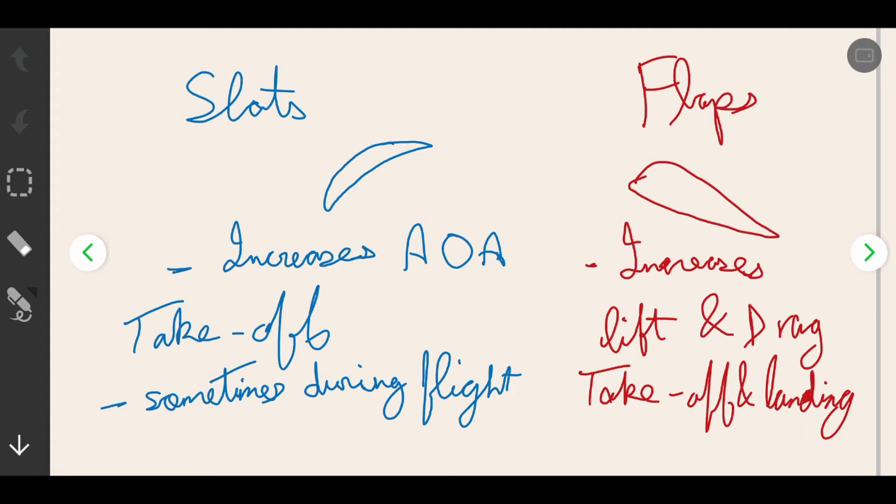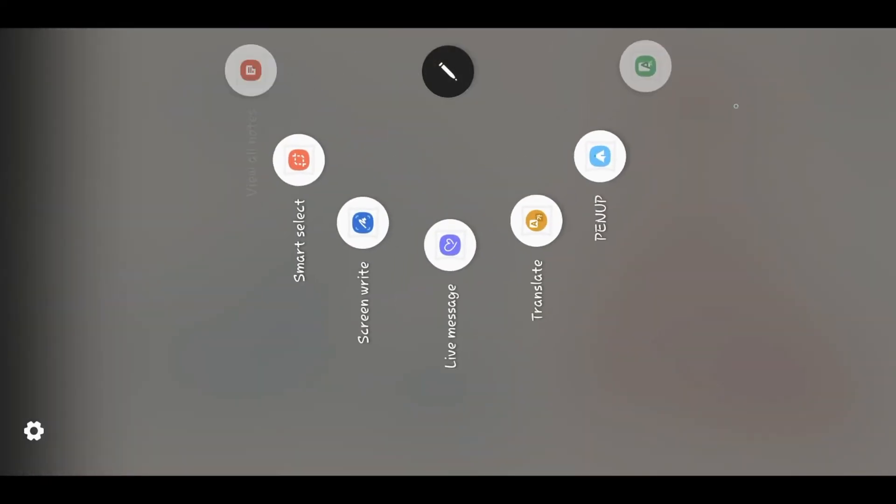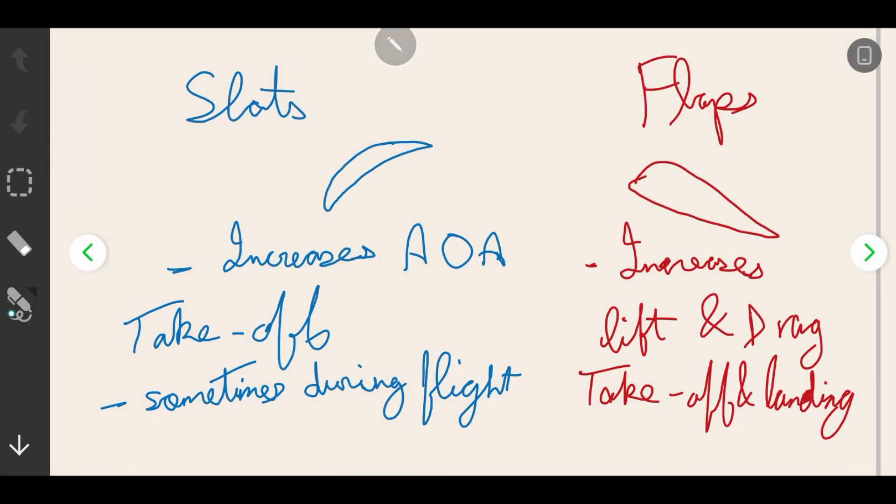In result, this increases an angle of attack. Moving on, flaps are used to increase lift and reduce speed. During takeoff, slats and flaps are not deployed fully, but during landing they are deployed fully.